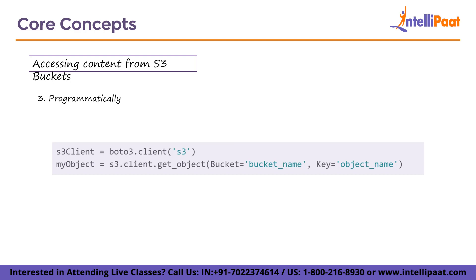The third way is by doing it programmatically. This is the most common way to access objects in S3, since most use cases will not have the bucket set to public access. You can achieve this using the Boto3 SDK, which is written in Python and is generally used to interact with AWS services. In the first line, we instantiate an S3 client using the Boto3 library. In the second line, we assign the result of the get_object method to a variable called my_object. The get_object method takes two arguments — bucket and key — where we pass the bucket name and the object name respectively.